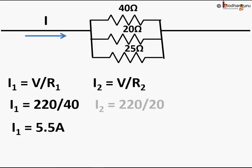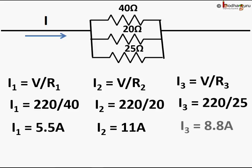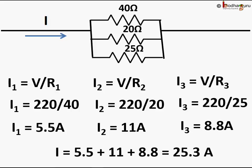For the second resistor, I2 equals V by R2, which is 220 by 20, equal to 11 amps. For the third resistor, I3 equals V by R3, which is 220 by 25, equal to 8.8 amps flowing through R3. So the total current through the circuit I equals I1 plus I2 plus I3, which is 5.5 plus 11 plus 8.8, equal to 25.3 amps.